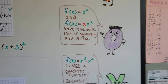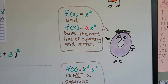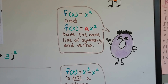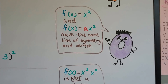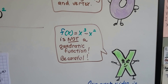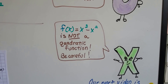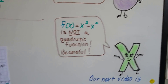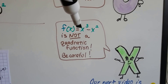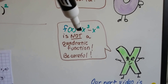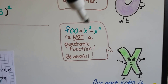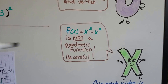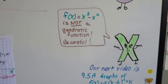f(x) equals x squared and f(x) equals ax squared will have the same line of symmetry and vertex. Also be careful: something like f(x) equals x to the third minus x squared is not a quadratic function, since x cubed divided by x squared gives just x. It must have x squared as the highest power to be quadratic.